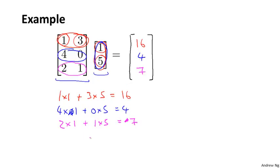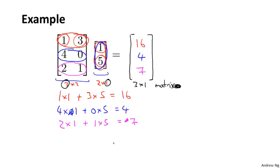It turns out that the result of multiplying a 3 by 2 matrix by a 2 by 1 matrix, which is a 2-dimensional vector, is going to be a 3 by 1 matrix — a 3-dimensional vector. I realized that I did that pretty quickly, and you're probably not sure if you can repeat this process yourself, but let's look in more detail at what just happened and what this process of multiplying a matrix by a vector looks like.